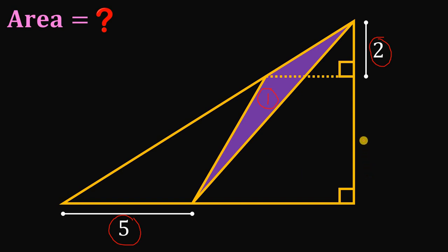To answer this question, what we're going to do is let this side be equal to a variable and let's call this x. And the other side of this right triangle, let's call this y. Now this is the only thing that we need to find the area of the shaded region.